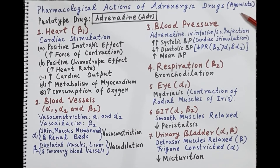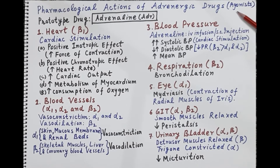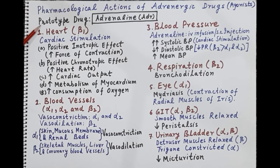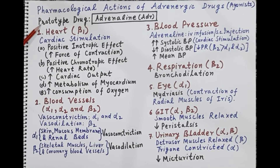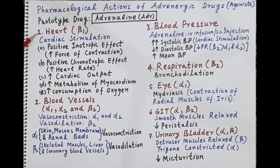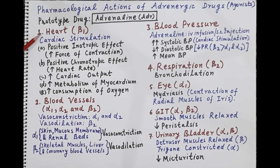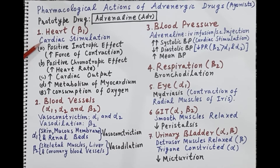The slide shows the pharmacological actions of sympathomimetics, that is adrenergic agonists. The prototype drug is adrenaline. The first effect is on the heart, where beta 1 receptors are present. Adrenaline binds to beta 1 receptors on the heart and produces cardiac stimulation.